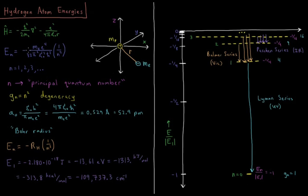The energies equal negative mass of the electron times magnitude of the charge of the electron to the fourth, divided by 32 pi squared epsilon naught squared, permittivity of free space squared, h-bar squared, Planck's constant over 2 pi quantity squared, times 1 over n squared.